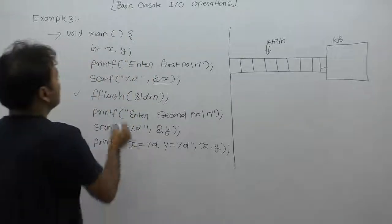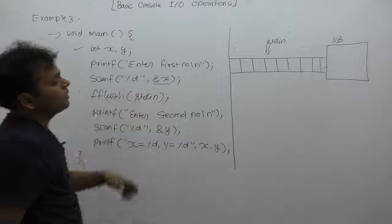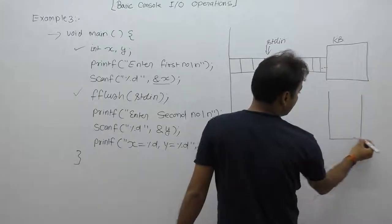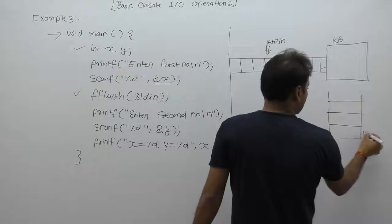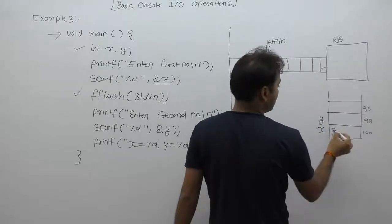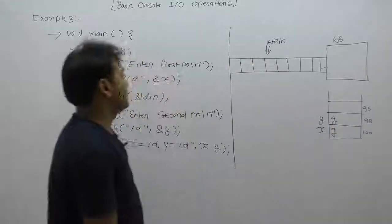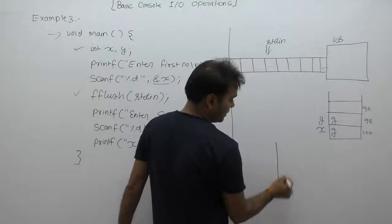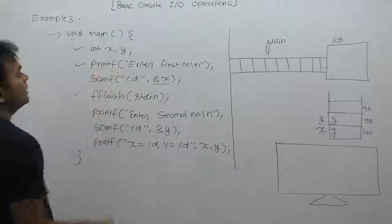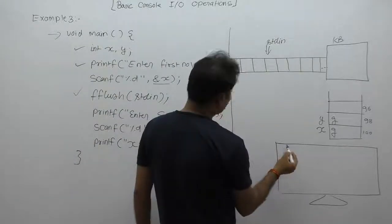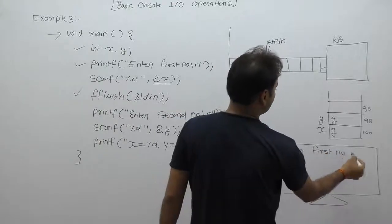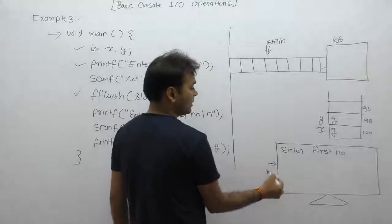Next, as execution starts, first of all allocating memory space for local variables x and y. x, y are local variables, therefore created inside stack memory at some stack addresses 100, 98, 96. x, y with initial values as garbage. Next, on some output device monitor window, we are displaying some message. Next, finally, first of all, enter first number. This message will be printed on the monitor with the help of printf function. Enter first number, then slash n, cursor on the next line.